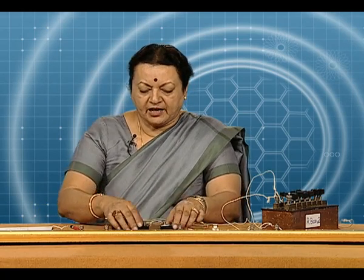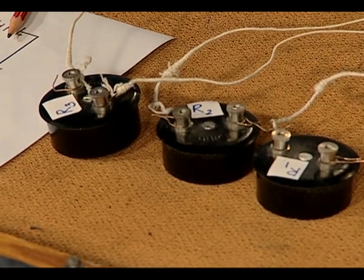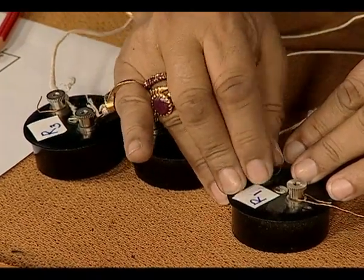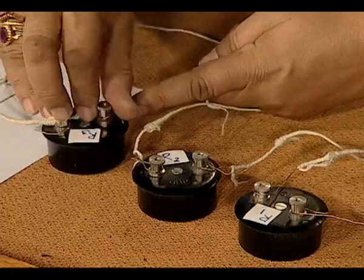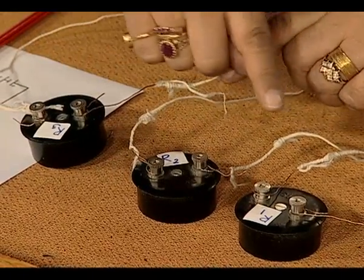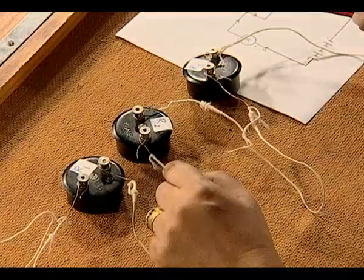Some of the common circuits used in the lab are series circuits. Suppose we have 3 resistances in a circuit. The current flows to R1, then it goes on to R2 and R3. The connection for the resistance boxes R1, R2, R3 should be like this. A key factor in a series circuit is that the current through all the resistances is the same. The combined resistance of the entire circuit is given by R1 plus R2 plus R3.